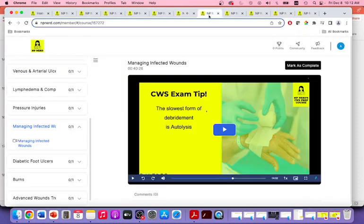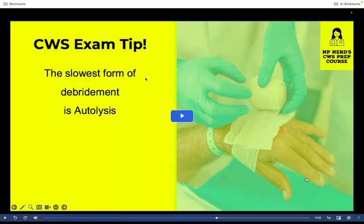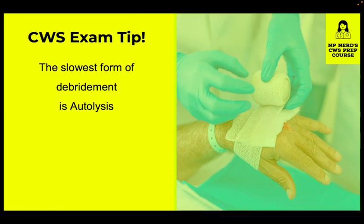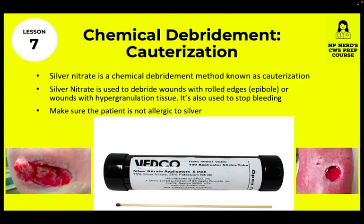Lesson 7 covers managing infected wounds. The CWS exam will try to confuse you — they'll ask what's the slowest method of debridement and throw in sharp or chemical debridement. Remember: autolysis is the slowest because you're just waiting on the body. Chemical debridement uses silver nitrate — when you use that with a Q-tip, it's known as cauterization. It's used to debride wounds with rolled edges such as epiboli.